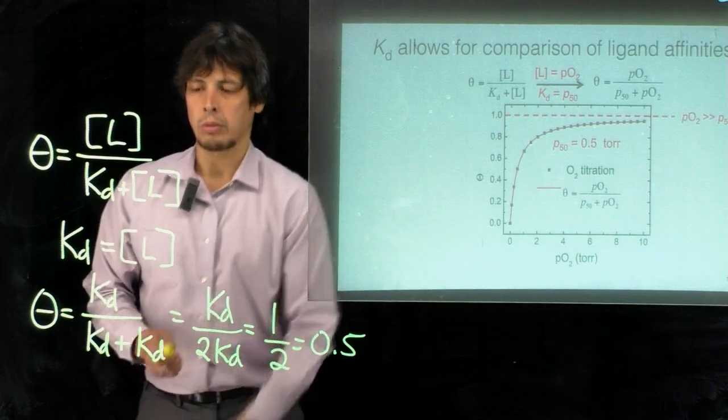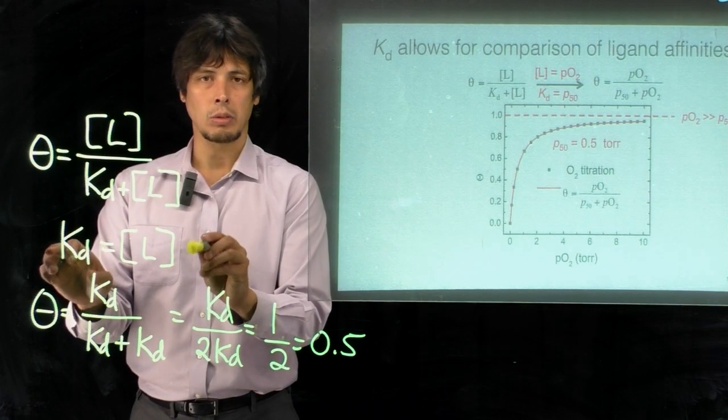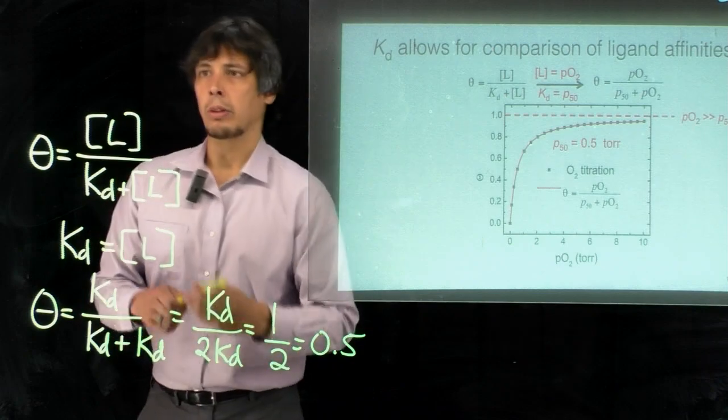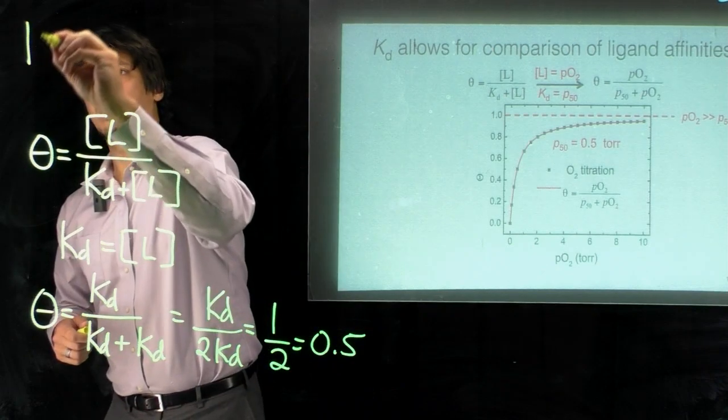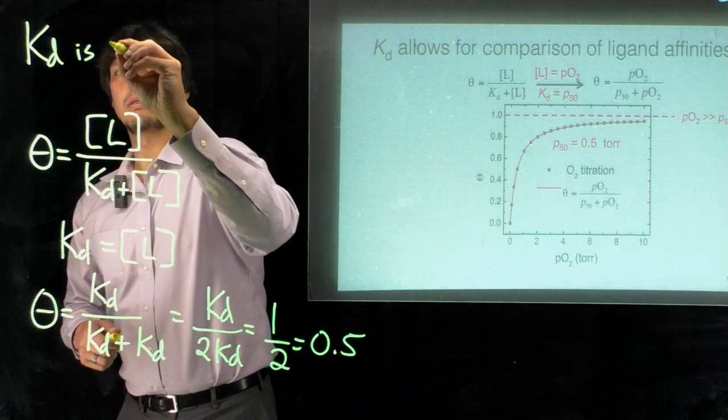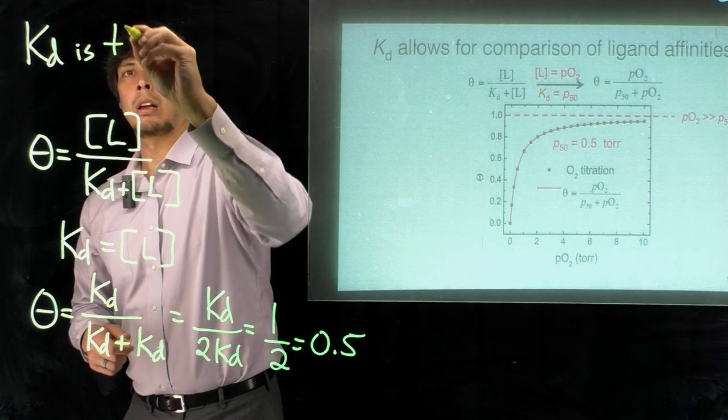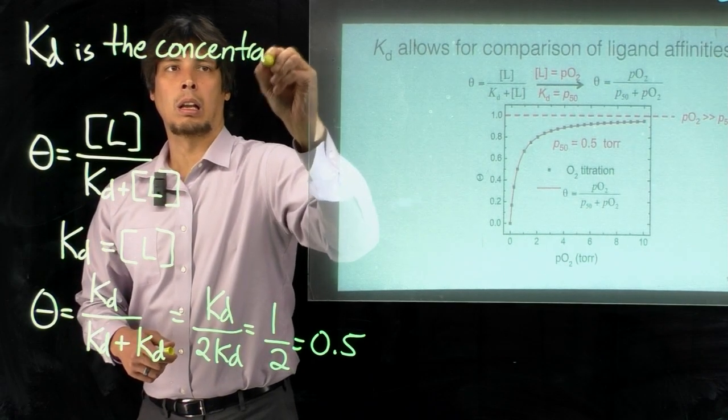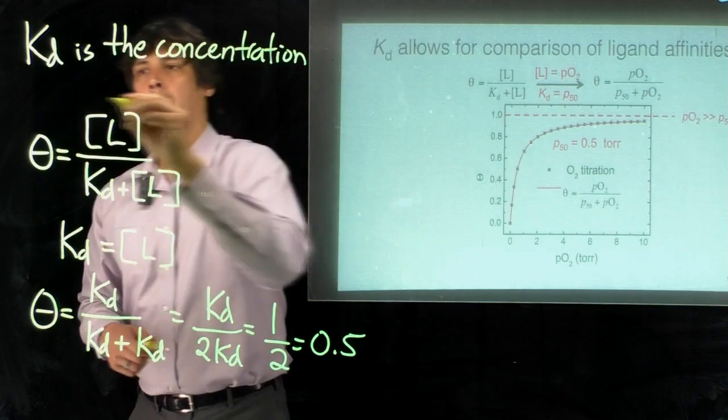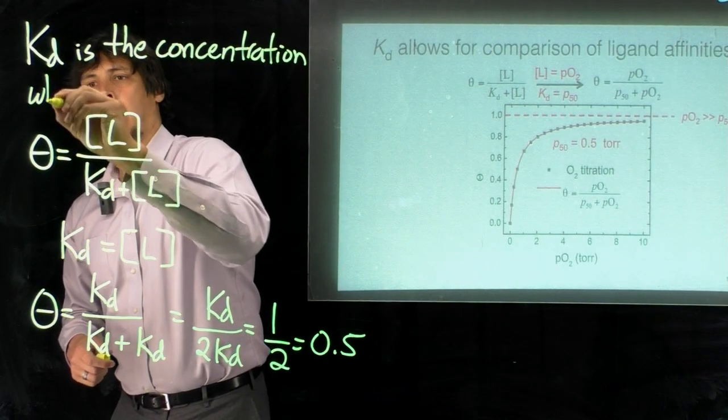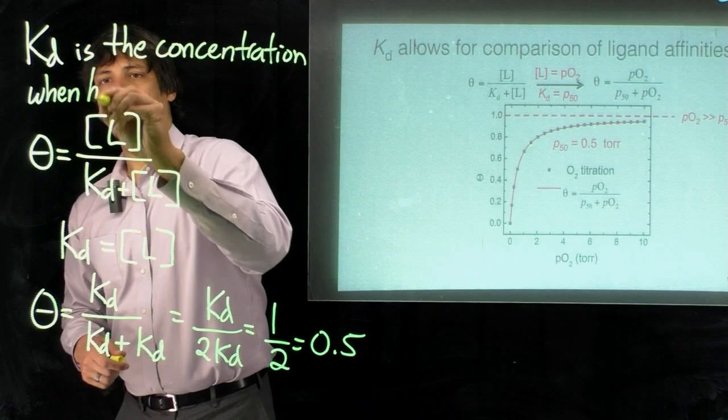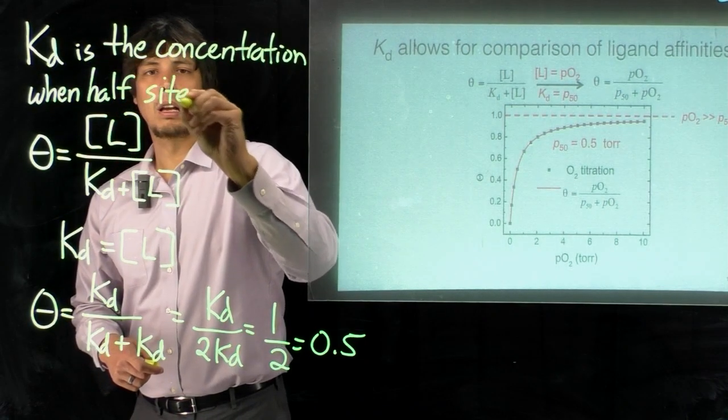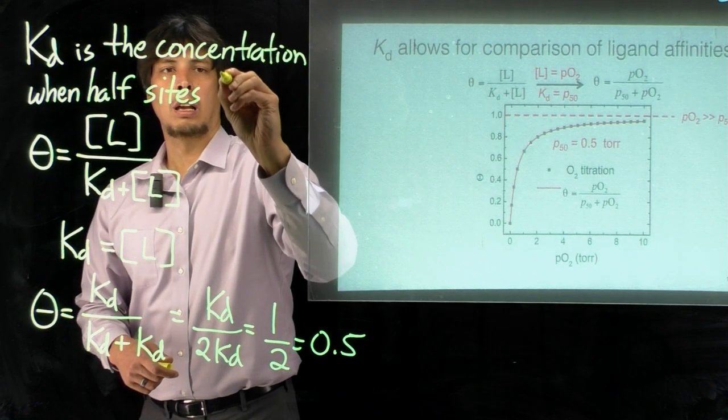And so that's really interesting because what that says is when KD is equal to the ligand concentration, theta is equal to 0.5. So in other words, KD is the concentration when half of the sites have ligand bound.